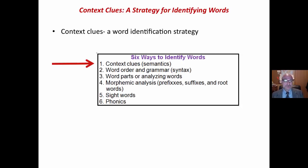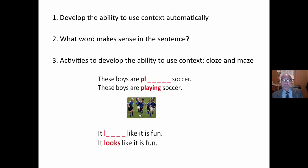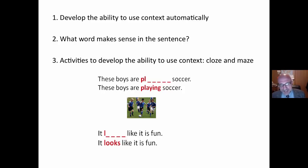Using context clues is one of six ways to identify words that you do not recognize as you are reading. We need to teach this. We develop the ability to use context automatically. We teach the process to develop the clues. We ask students what word makes sense in the sentence. We do this in large group many times, then in small group and individually. Eventually students are able to do this automatically.